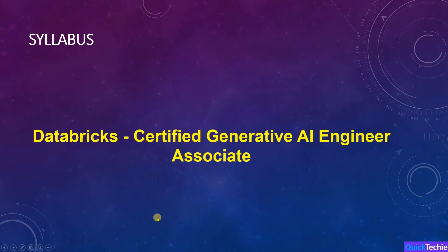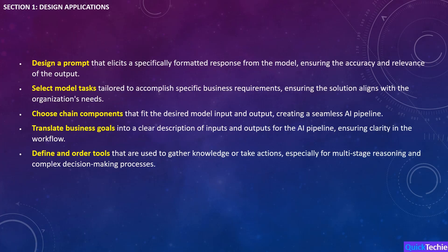In this section, we'll cover the key aspects of designing applications using generative AI on the Databricks platform. You'll first learn to design prompts that generate specific, accurate responses from the AI, ensuring quality and usefulness. Next, you'll focus on selecting model tasks that align with business needs, followed by choosing the right chain components for each step in the AI pipeline. You'll also learn to translate business goals into clear input-output descriptions for the AI model, crucial for meeting real-world objectives. Finally, we'll explore how to define and sequence tools for multi-stage reasoning in complex AI applications, ensuring the desired outcomes.